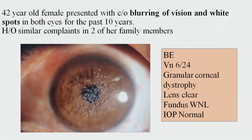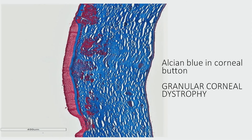A 42-year-old female presented with blurring of vision and white spots in both eyes for the past 10 years, with a history of similar complaints in two family members. Both eye vision was 6/24. A provisional diagnosis of granular corneal dystrophy was made on anterior segment examination; the rest of the anterior segment, fundus, and pressures were normal. The patient underwent penetrating keratoplasty, and using Alcian blue staining on the corneal button, a final diagnosis of granular corneal dystrophy was confirmed.